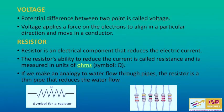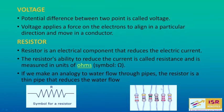Next is resistor. A resistor is actually an electrical component that has two terminals and it is used to limit the flow of current in a circuit. The resistor's ability is called resistance and it is measured in ohms. If we make an analogy to water flow through pipes, then a resistor is like a thin pipe that reduces the water flow. The symbol of a resistor is a zigzag line.